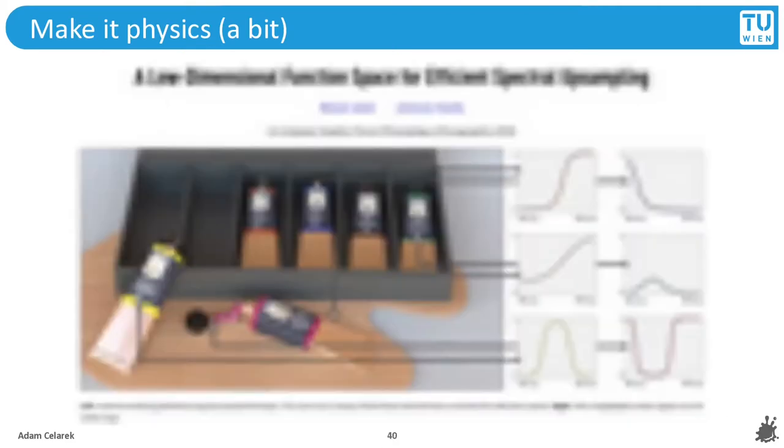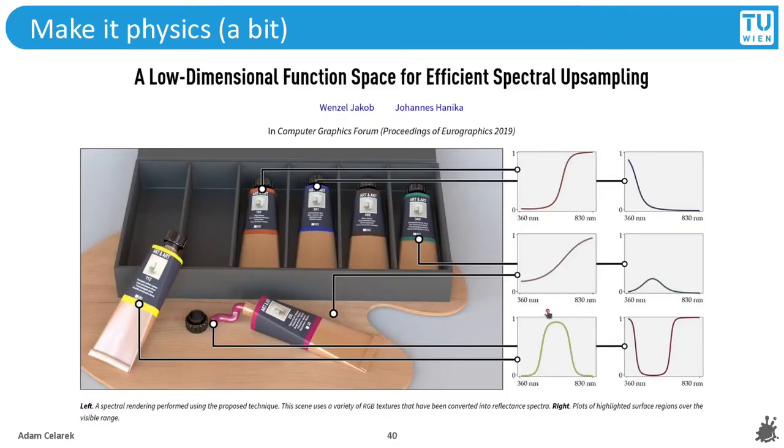This is a work by Wenzel Jakob and Johannes Hanika which, instead of using the samples that we saw before, they use functions. These functions are an efficient way to store a description of the electromagnetic spectrum. They can be used for emitters, for the surface materials, and they can be combined in an efficient way. Look at the paper if you want to see more details.